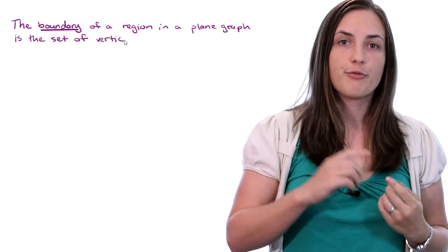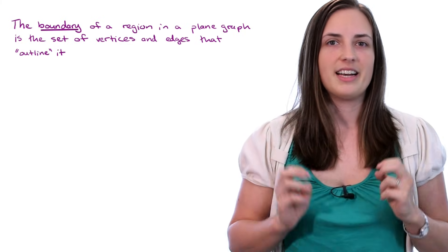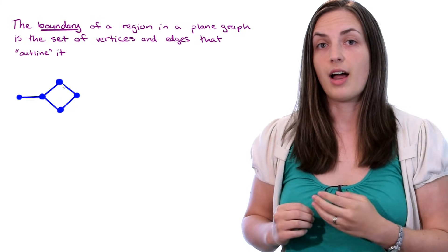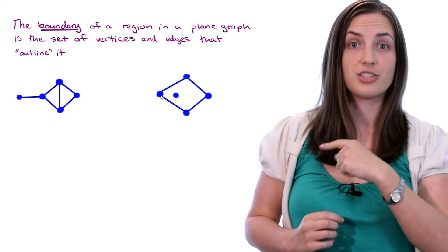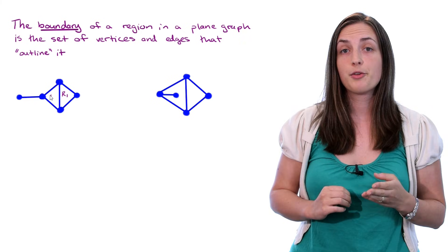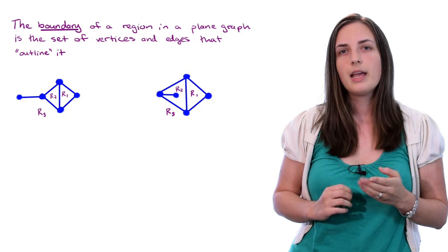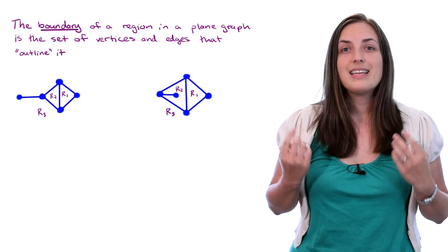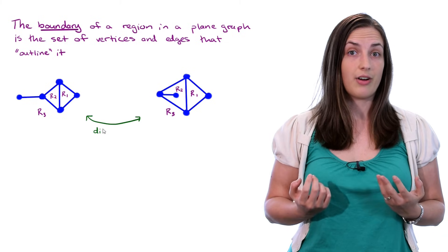The boundary of a region in a plane graph is the set of vertices and edges that outline it. So if we take a look at this example graph, which is a plane graph, and this example graph, which is also a plane graph, we can label the regions r1, r2, and r3, and we see that although the graphs are isomorphic, these are different plane graphs.